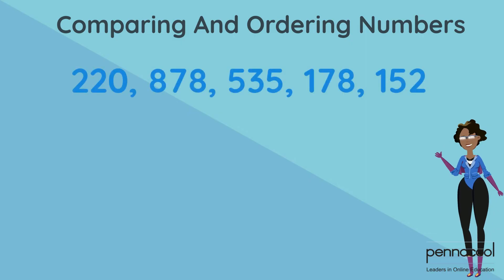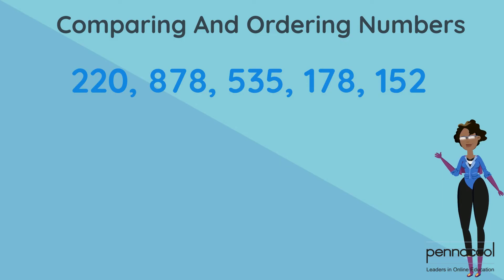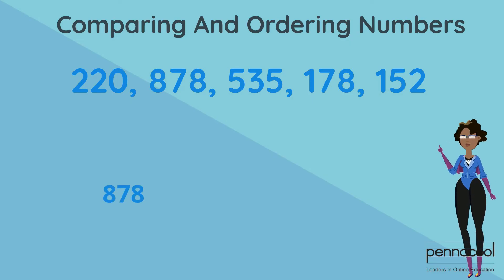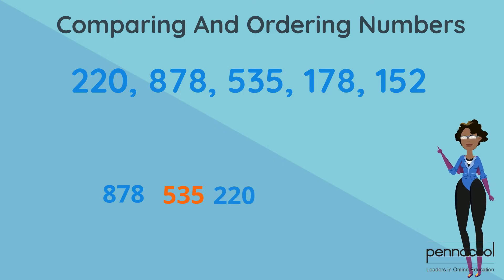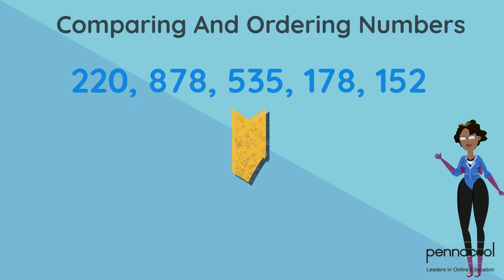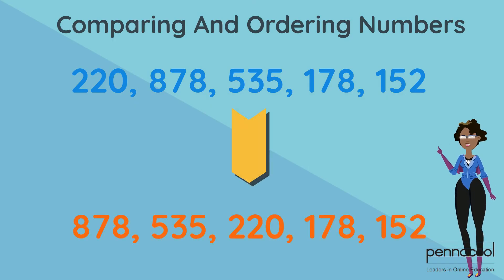Look at the numbers below: 220, 878, 535, 178 and 152. Let's see if we can put them in descending order. This means that we have to start from our largest number, which is 878. Next in line would be 535, then 220, followed by 178 and finally 152. We did it! We went from having the numbers arranged like this to arranging them in descending order, meaning starting with our largest and ending with our smallest.